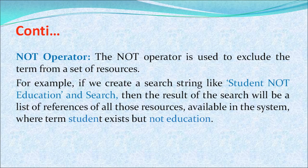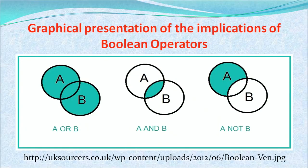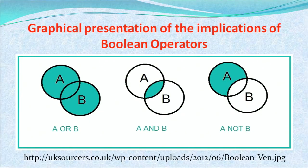The NOT operator is used to exclude a term from a set of resources. For example, searching 'student NOT education' returns a list of all resources where the term student exists but not education. This is also shown in a graphic presentation of the Boolean operators, where A represents students and B represents education, illustrating the implications of each Boolean operator.